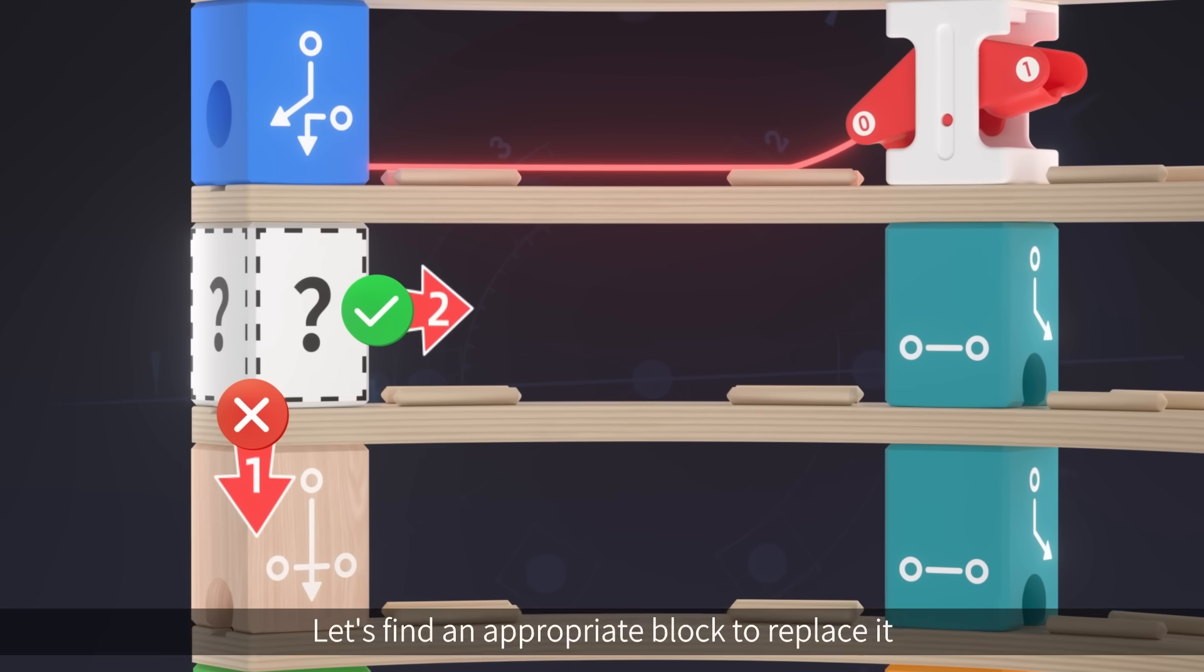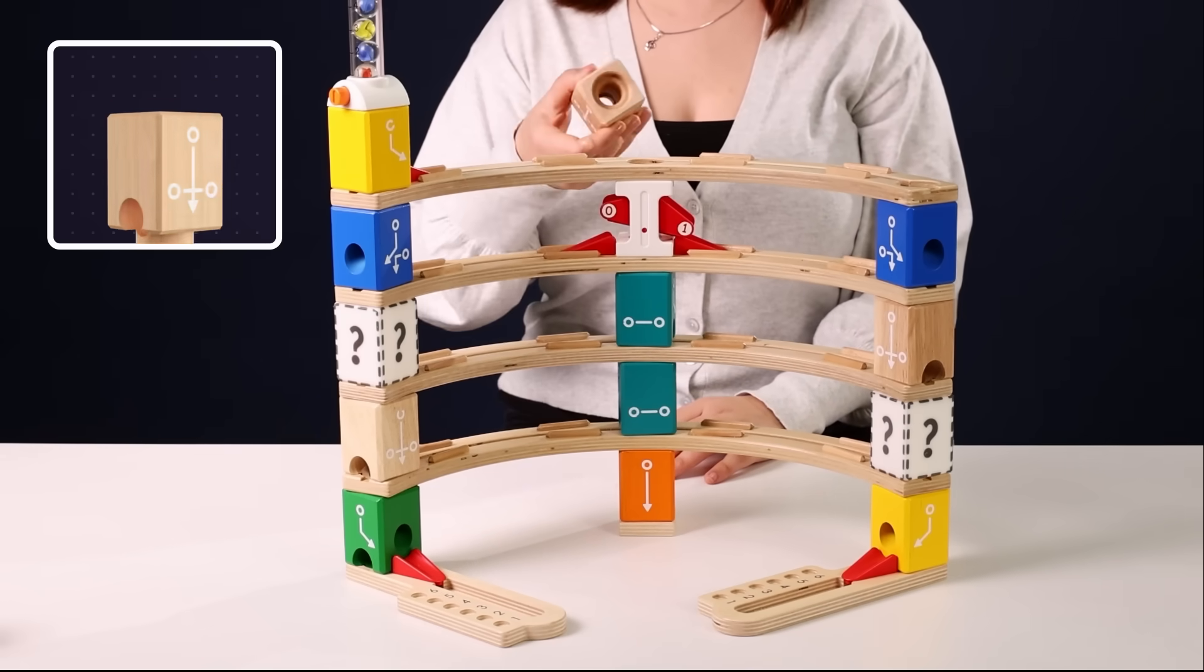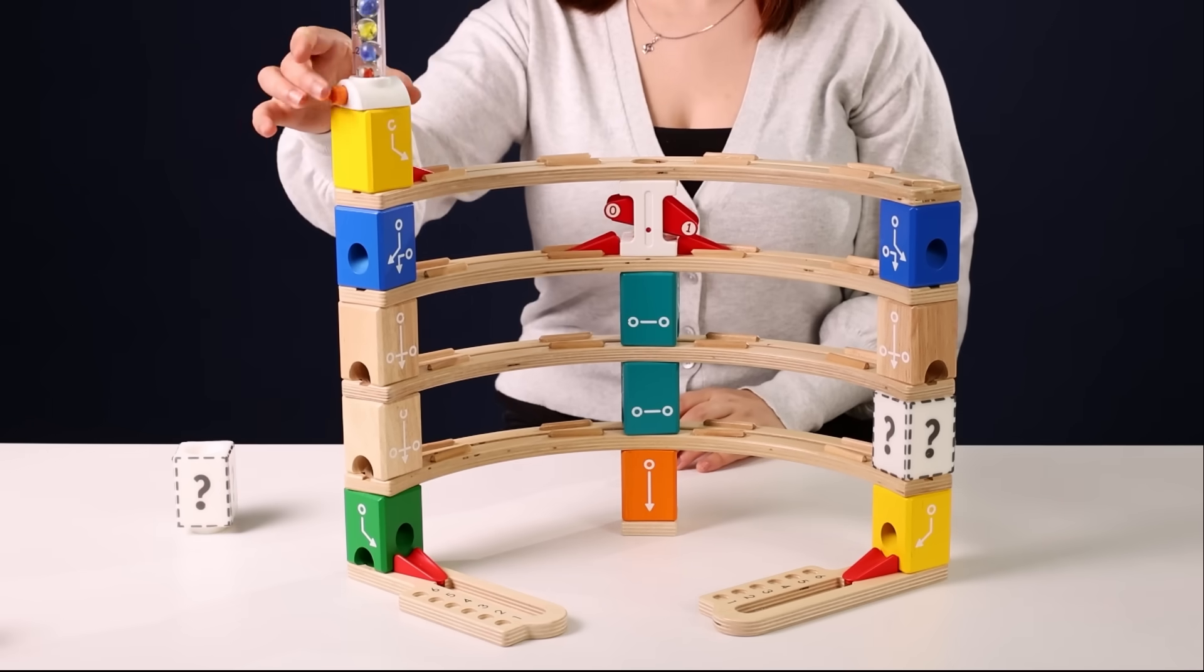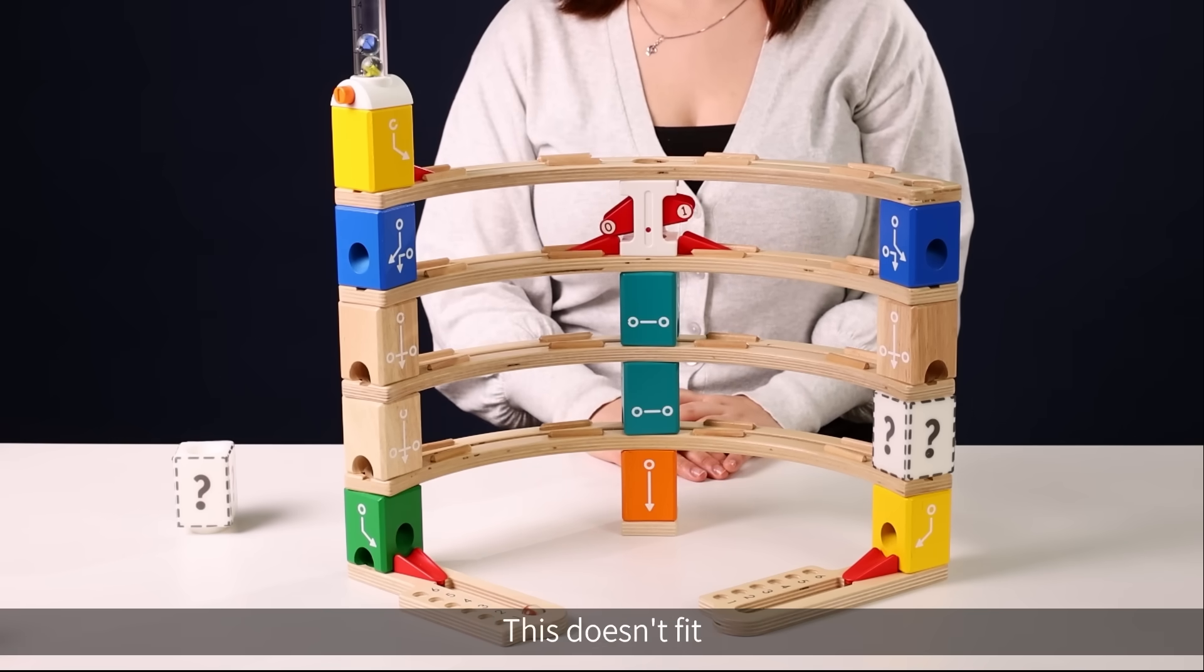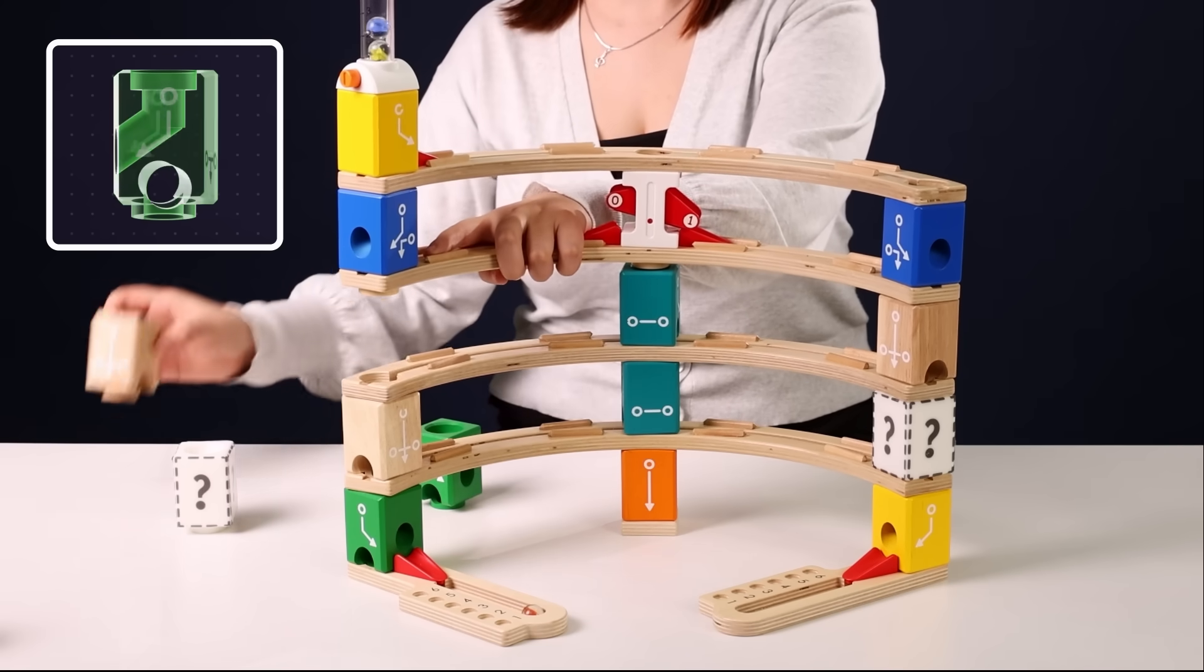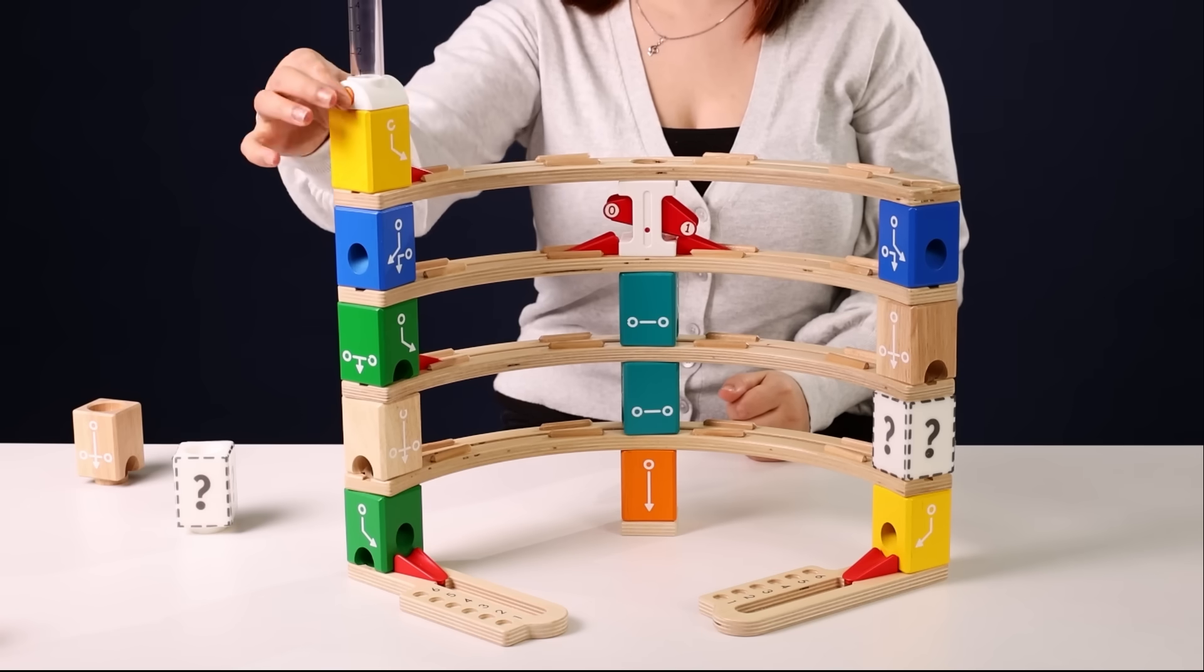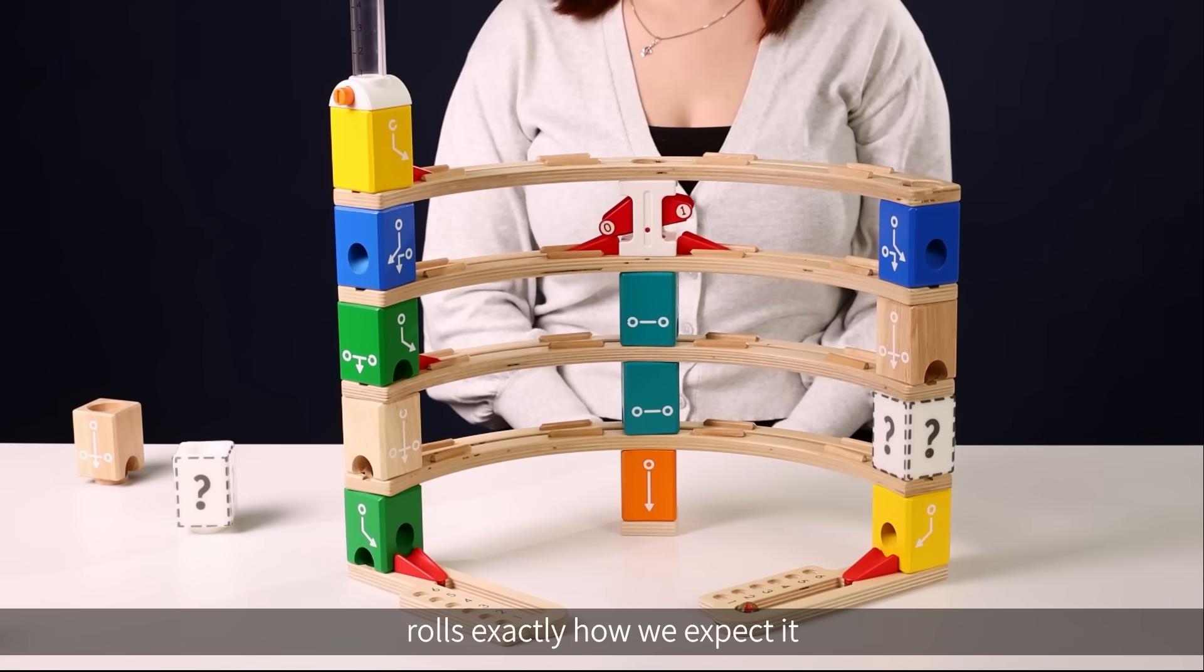Let's find an appropriate block to replace it. How about the natural block? It has a straight path... hmm, this doesn't fit. How about the green one? It seems to be the right option because it does have the right exit. You can see that the red marble rolls exactly how we expected.